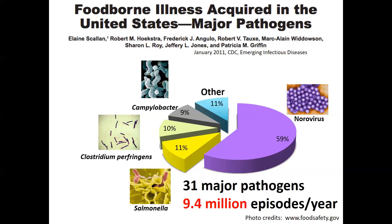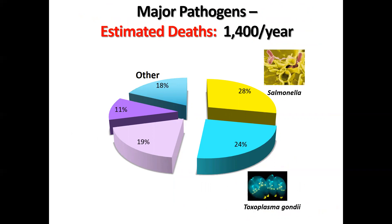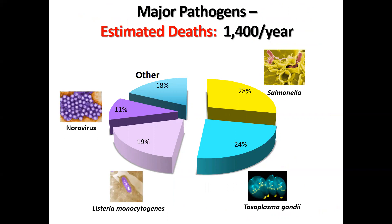All other pathogens contribute to 11% of the remaining total foodborne illnesses reported every year in the United States. In terms of deaths caused by biological hazards, it's estimated that Salmonella causes the highest number of deaths, followed by Toxoplasma gondii, which is a parasite. Listeria monocytogenes, a bacteria, causes a high number of deaths, and norovirus contributes to 11% of deaths, while all other pathogens contribute to the remaining deaths associated with foodborne illness. This may give you an indication of the severity of some of these individual illnesses.